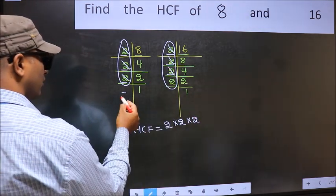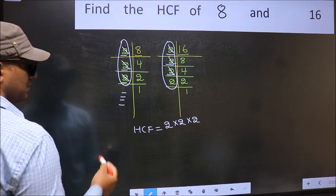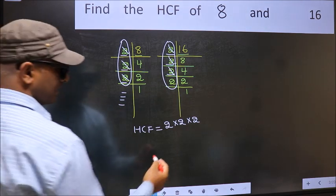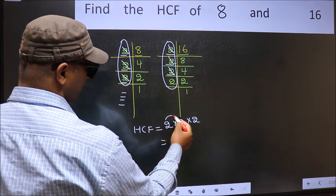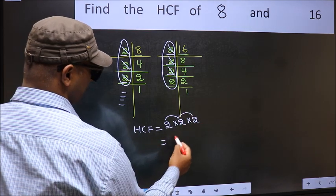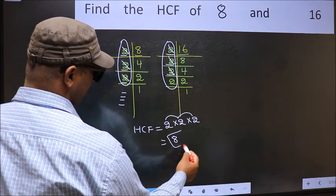No more numbers have been left out. So our HCF is 2 into 2, 4 into 2, 8. 8 is our HCF.